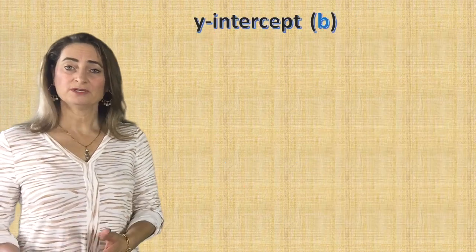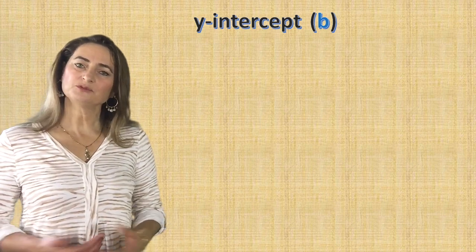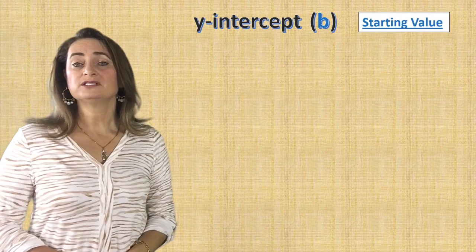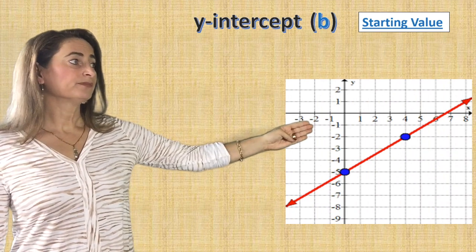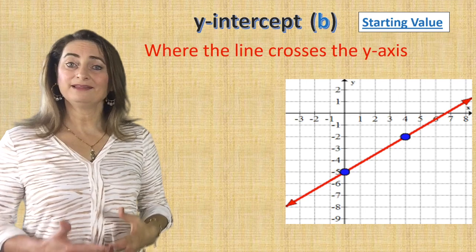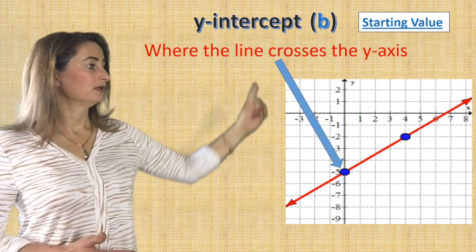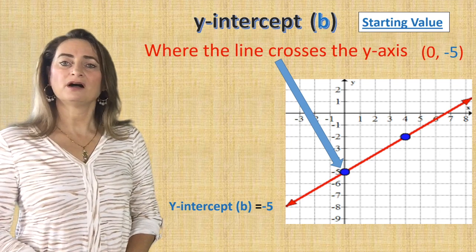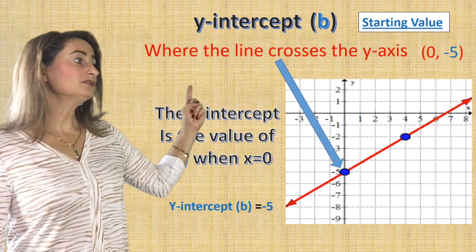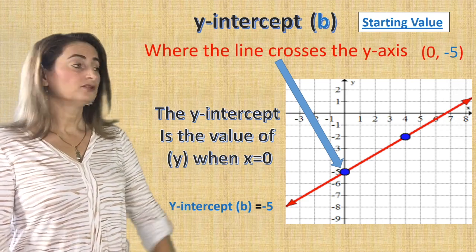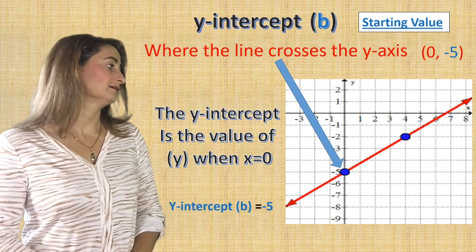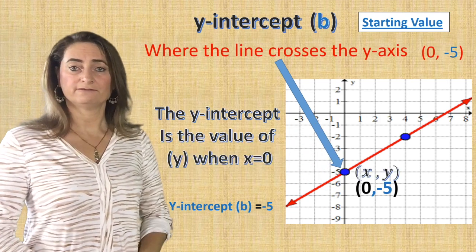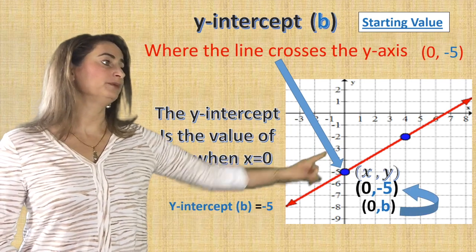Since we're writing equations in slope-intercept form, we found the slope. Now we need to find the y-intercept. We have another letter for it, which is b, and another name, which is the starting value. Look at the graph — where does the line cross the y-axis? It intersects the y-axis right on negative 5. So the y-intercept equals negative 5. Another way: the y-intercept is the value of y when x equals 0. The coordinate is (0, negative 5), so b equals negative 5.